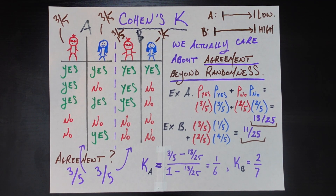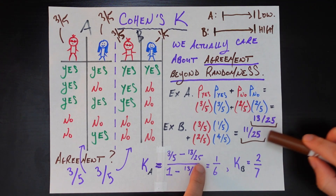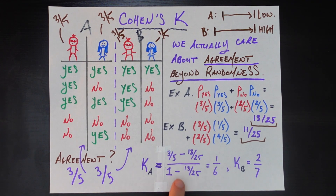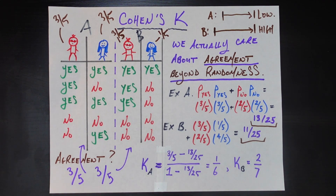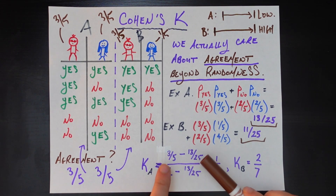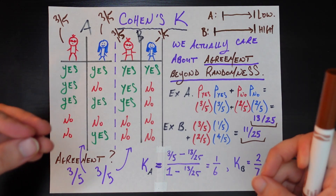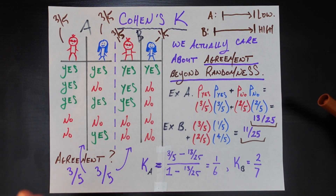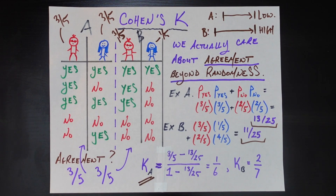How do we measure that lift mathematically? We use a simple formula. The numerator is the observed agreement minus the baseline agreement by random chance alone — for case A that's 3/5 minus 13/25, exactly the size of the lift arrow. The denominator is a normalizing factor: perfect agreement (1.0) minus that same baseline probability (13/25). The numerator measures additional lift beyond random chance; the denominator measures the total additional lift that was available. Working out the math, we get 1/6 for case A — and without even saying Cohen's Kappa yet, we've just derived the formula for it.